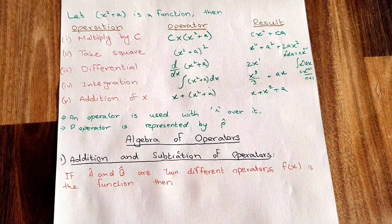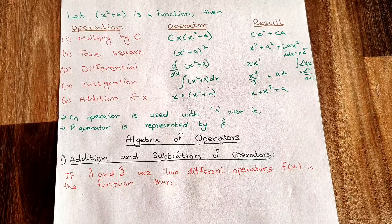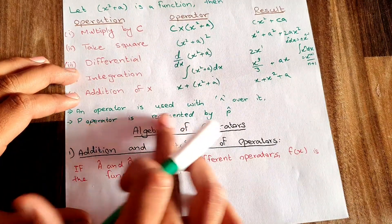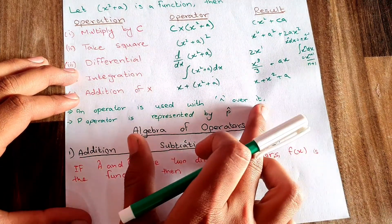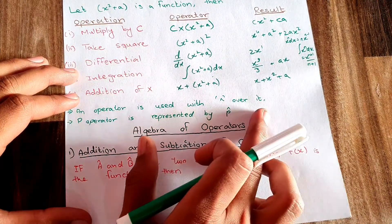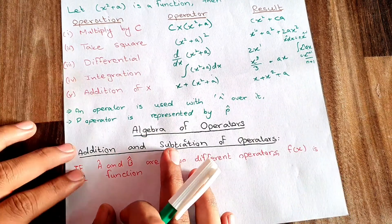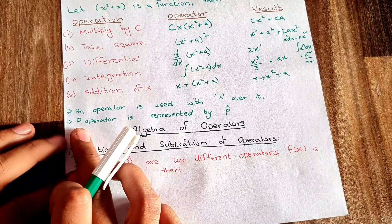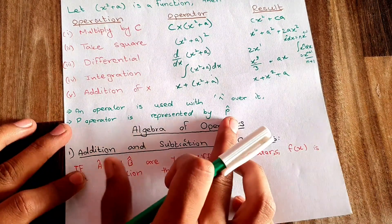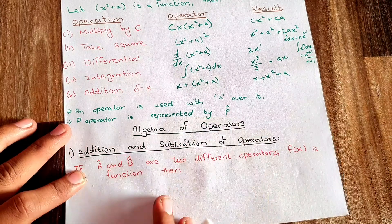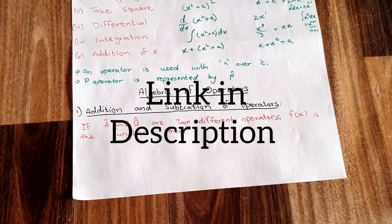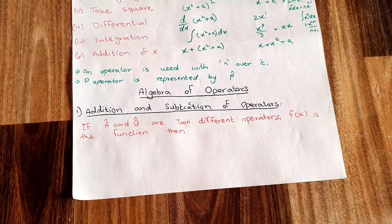This is how an operator is applied on a function. An operator is written with a caret (hat) symbol over it — so if p is an operator, I write p-hat. The next topic we are going to discuss is the algebra of operators.